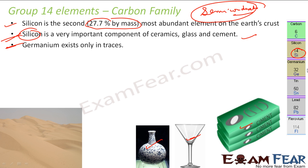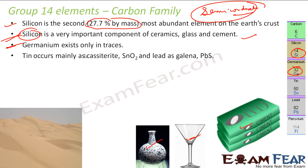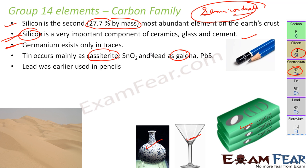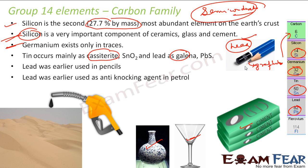Germanium exists only in trace amounts and is found mainly in cassiterite and galena forms. Lead was used earlier in pencils — that is why it is called the lead pencil — but since lead is poisonous, it is no longer used. Instead, graphite, which is nothing but carbon, is now used in pencils, though the name 'lead pencil' remains. Lead was also used earlier in petrol as an anti-knocking agent, but again, since lead is poisonous, it is no longer used.